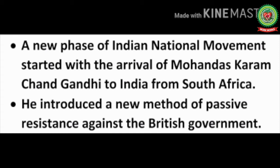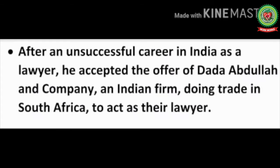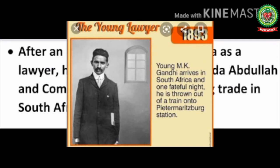Mahatma Gandhi was born on 2nd October 1869 at Porbandar in the district of Kathiawar, Gujarat. In 1888 he went to England and qualified himself as a barrister. After an unsuccessful career in India as a lawyer, he accepted the offer of Dada Abdullah and Company, an Indian firm doing trade in South Africa, to act as their lawyer.